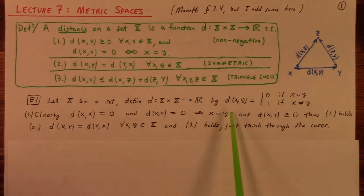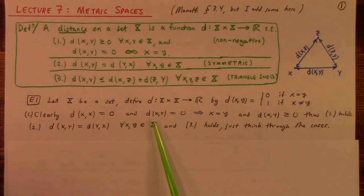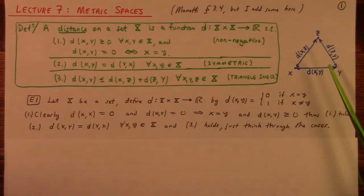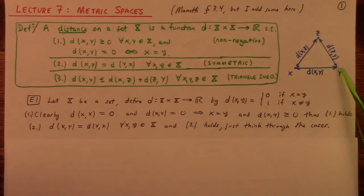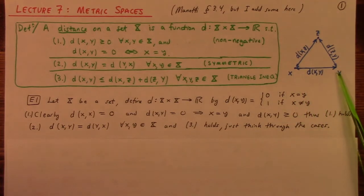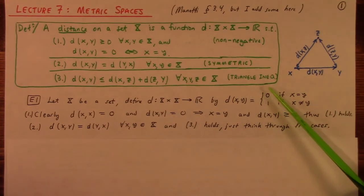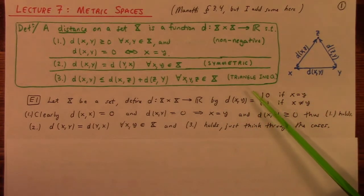You can run through the axioms of the distance function and see that this is symmetric, it's obviously set up so it's only zero if the inputs are the same point, and it's obviously non-negative by construction. For the triangle inequality, you just need to think through the cases. If you have three points and X and Y are the same point, the distance between them is zero, so the sum of distances to another point is either zero and one, one and zero, or zero and zero — either way satisfying the triangle inequality. So example one does in fact satisfy the triangle inequality.